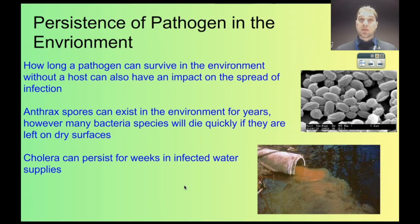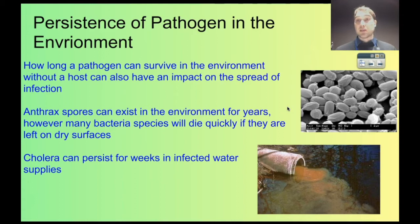As well as the persistence of the pathogen in the individual, the pathogen can also exist in the environment. The bacteria anthrax produces spores, and those spores can be active for many, many years in the soil before they get into a situation where they'll start reproducing and producing the bacteria again. If a pathogen is particularly persistent in the environment, it can take a very long time to stop the epidemic of a disease.